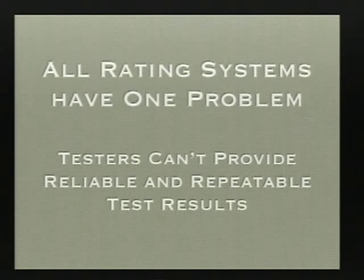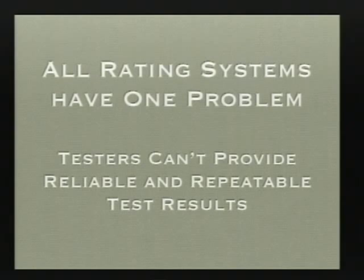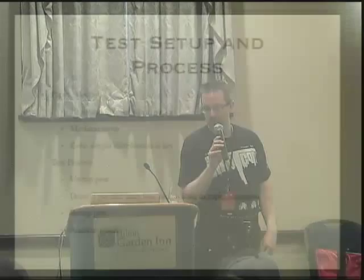I propose a line we can draw: the start of a pen testing standard. First, a test process. First is paper selection — we want to standardize on paper types or different weights of paper. We decided to go with 20-pound online white paper. We wanted to go 20-pound because that way you can do the test, flip it over, and see what sort of leakage occurs onto the other side. Since 20-pound is the most common type of paper used in an office environment, it allows you to detect if leakage is occurring through the paper.